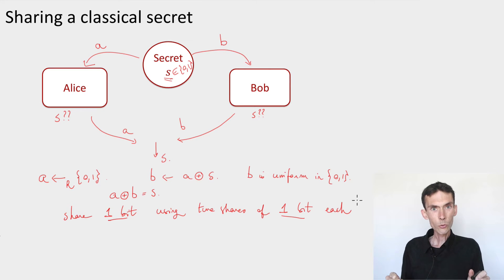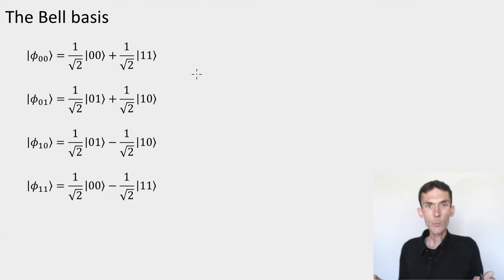So first, I want to introduce you a special basis of bipartite entangled states that's going to be useful for our scheme. This basis is called the Bell basis. So it's made of four states. These are four two-qubit states. I want to think of them as bipartite states shared between two systems, A and B. We could call them Alice and Bob.